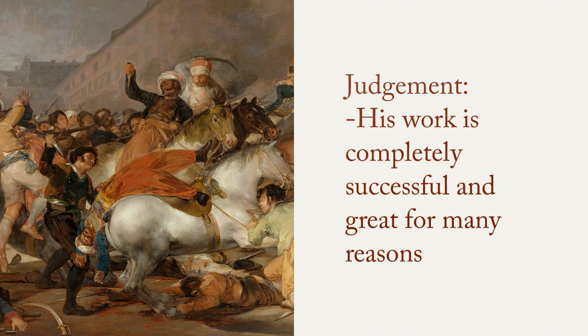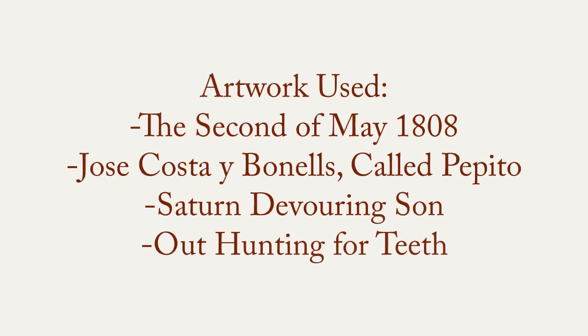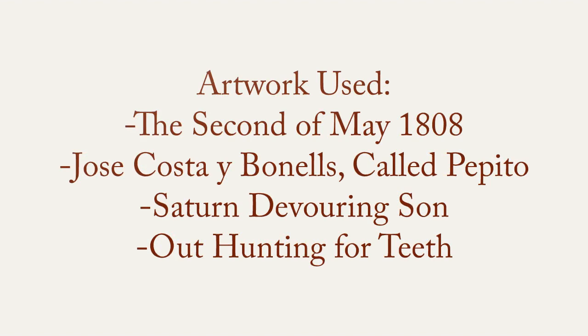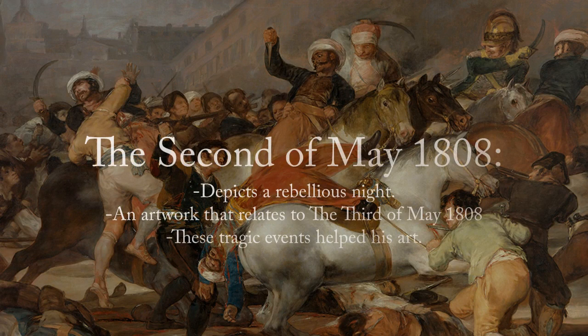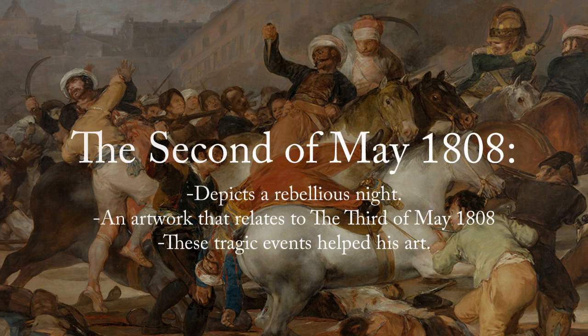Throughout this video, I used some of Goya's art pieces like Jose Costa y Bonels called Pepito, the 2nd of May 1808, Saturn Devouring His Son, and Out Hunting for Teeth. The 2nd of May 1808 depicts one of the Spanish people's rebellious nights during war. It talks about the same war as the 3rd of May 1808 painting, and the colors are very similar. It seems like these horrible events benefited Goya's art.